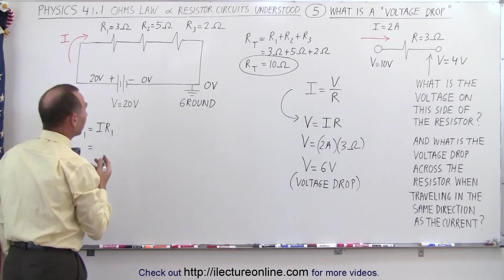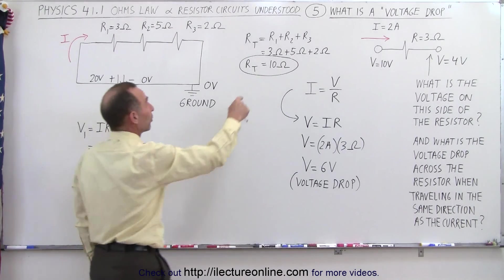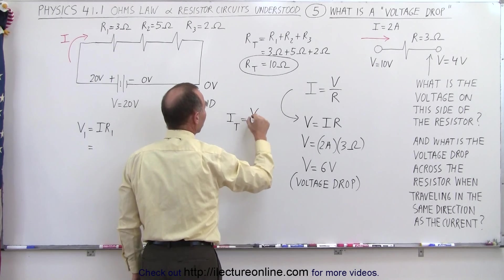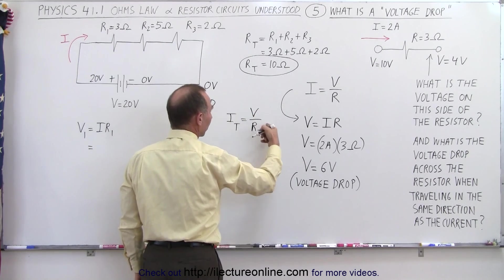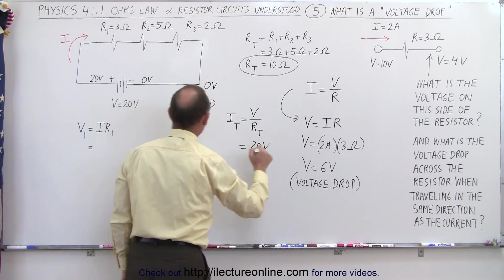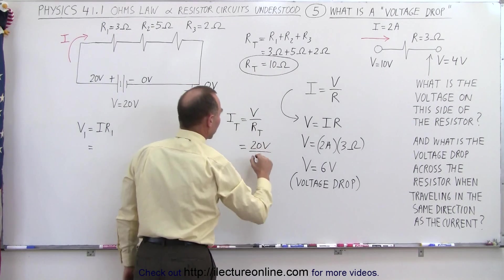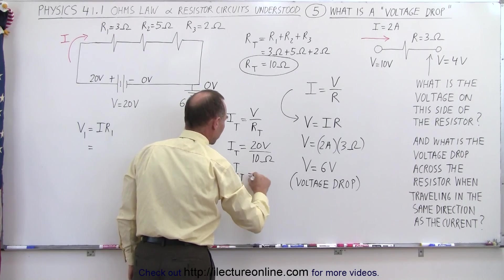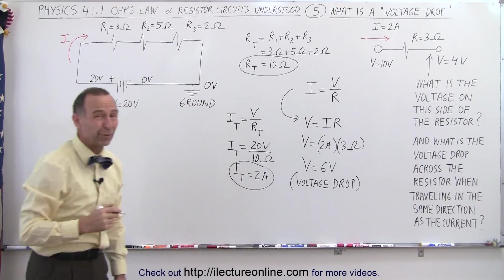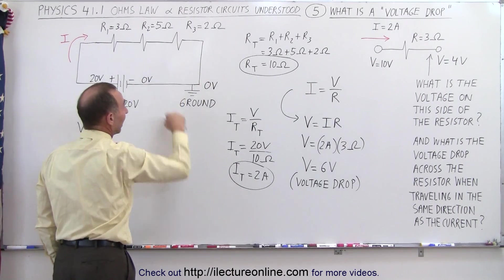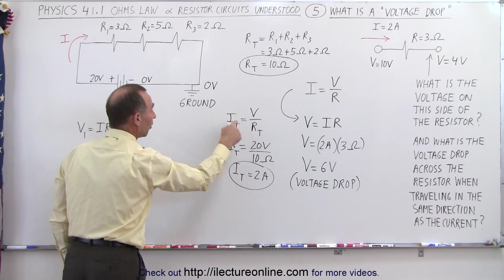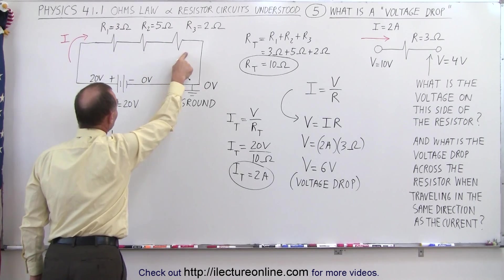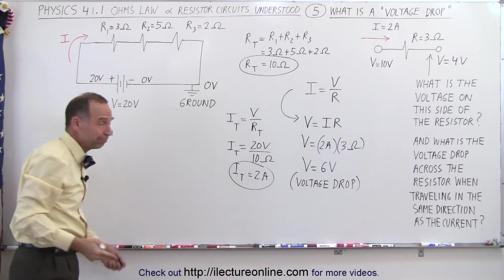To find V1 we first need the total current. Using Ohm's Law, I total equals the voltage applied divided by the total equivalent resistance — that's 20 volts divided by 10 ohms, giving us a total current of 2 amps. In a series circuit, every resistor carries the same current because current must flow through each one, so the current through each resistor is also 2 amps.